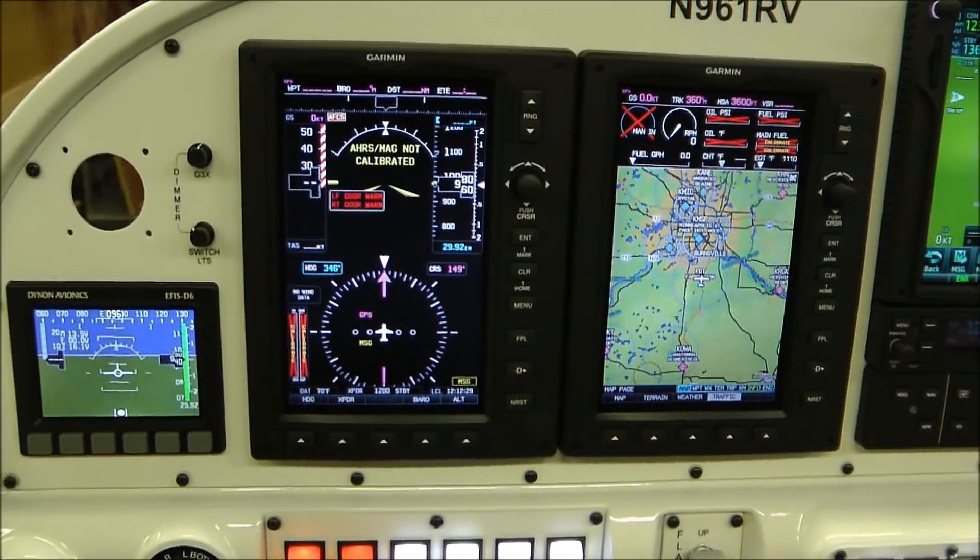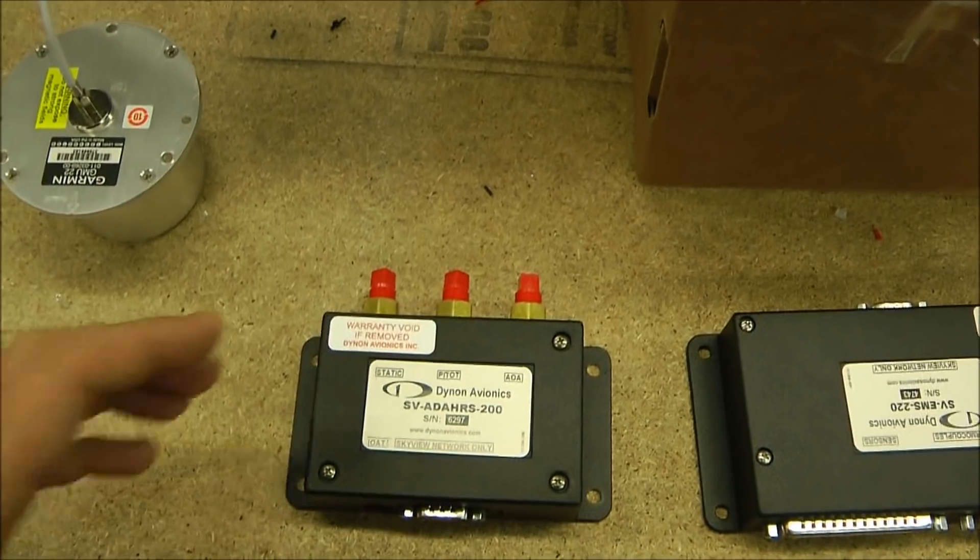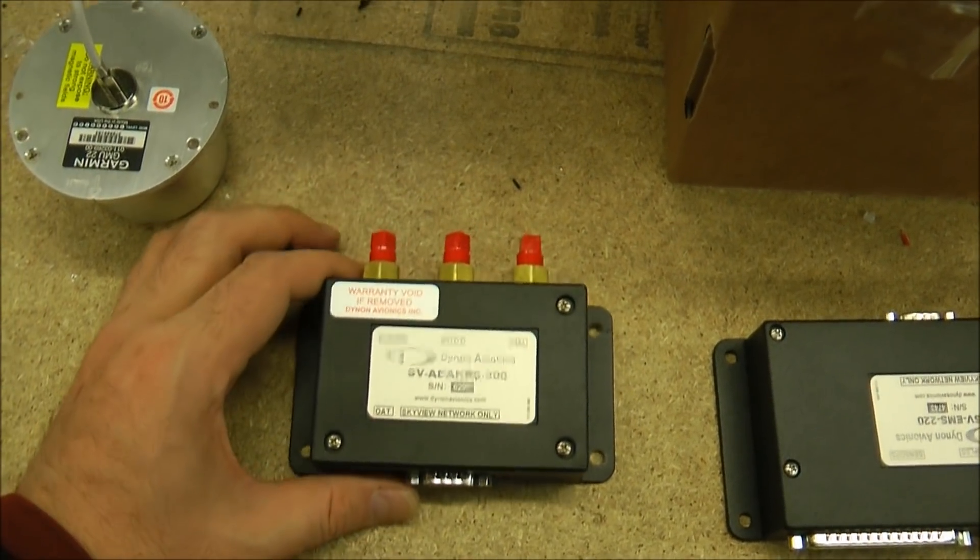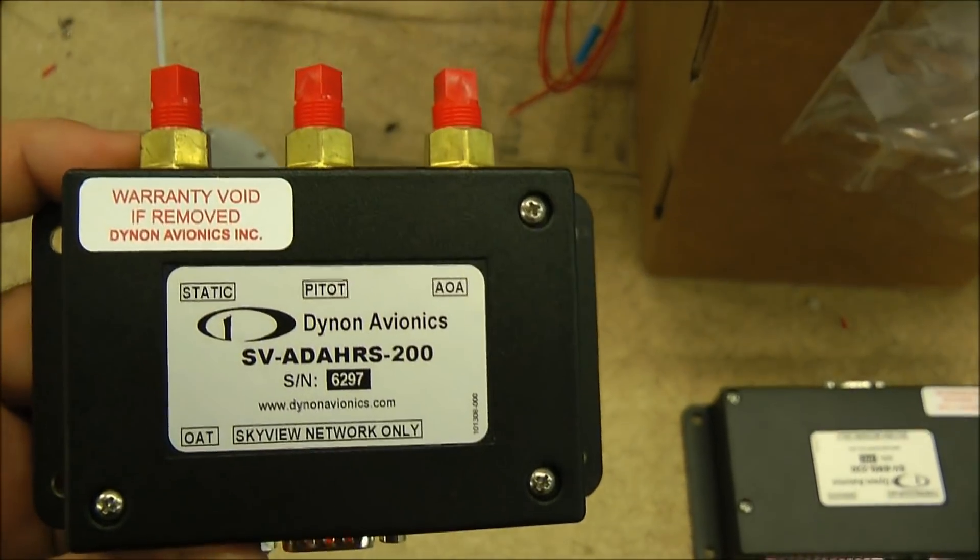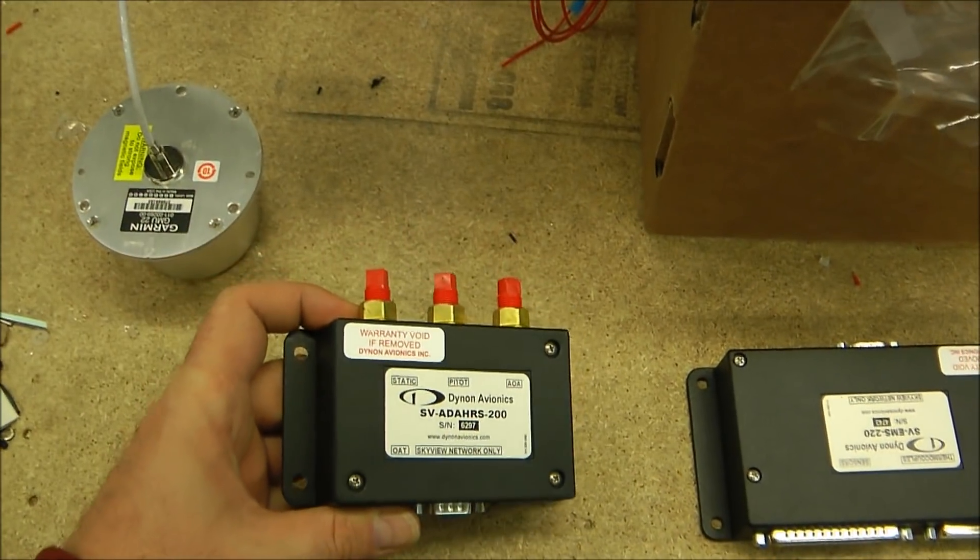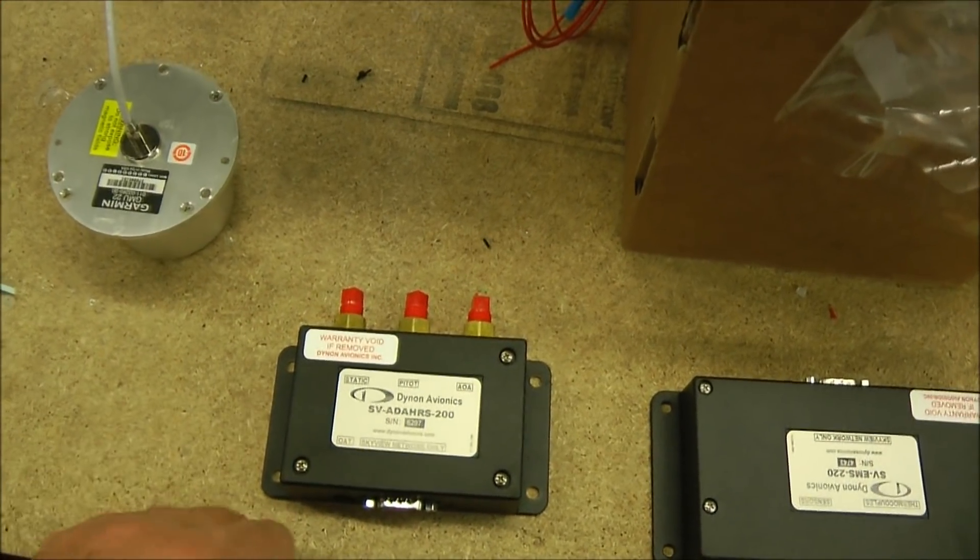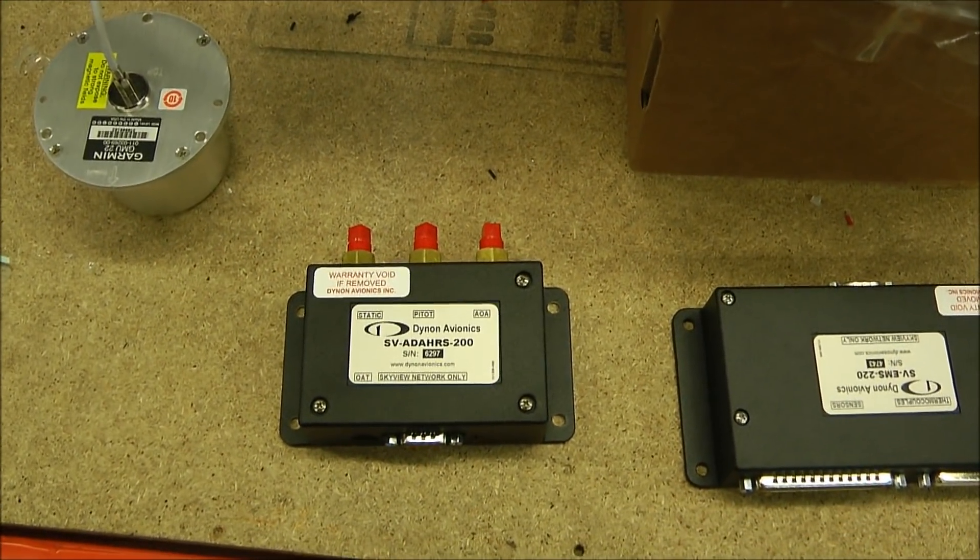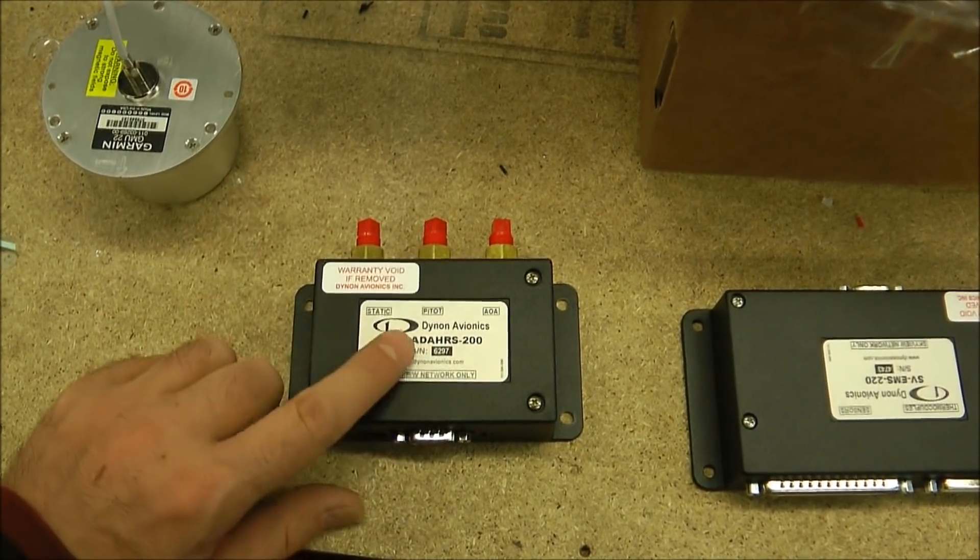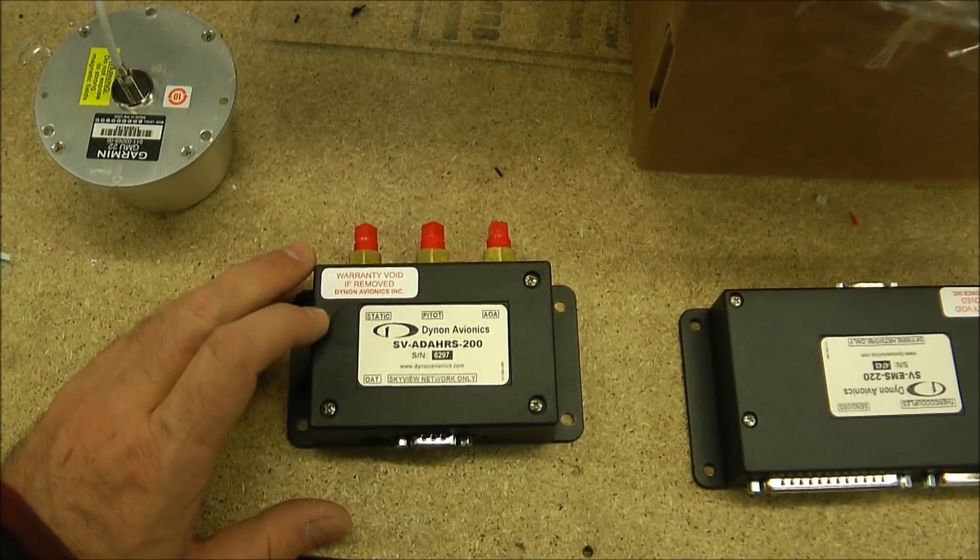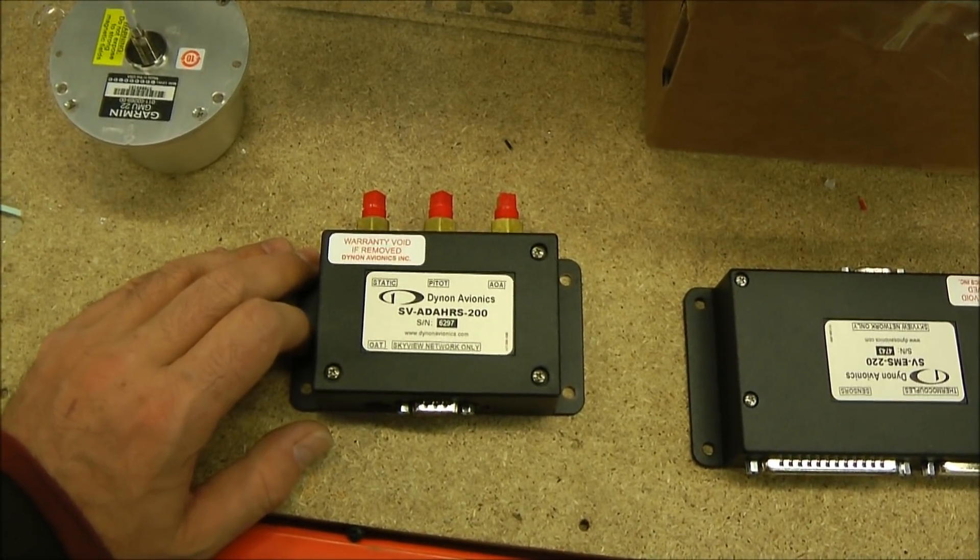In Dynon's Skyview network, they also use components that are remote-mounted. One of them is the Adahars box. People frequently ask us, what is an Adahars? So here's a picture of the Dynon one. They're all very small for the most part. The Dynon Adahars right here is unique in the fact that it has the compass built into it, also called remote magnetometer. The neat thing with that is you only have to mount one box instead of two.